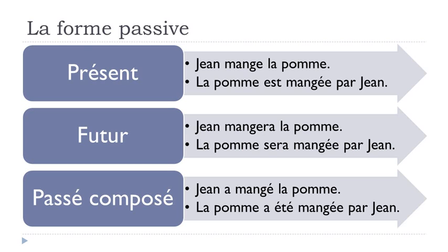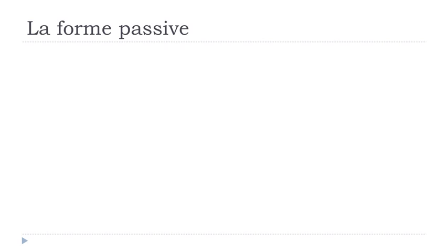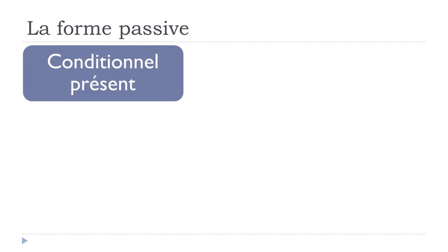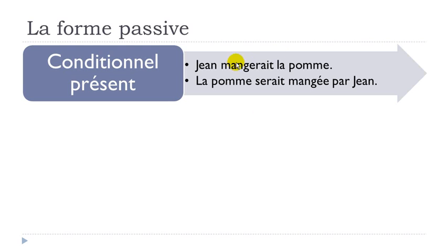For le passé composé: Jean a mangé la pomme becomes la pomme a été mangée par Jean. A été is the passé composé form of être — the rest doesn't change. Then for le conditionnel présent: Jean mangerait la pomme — mangerait means 'would eat' — becomes la pomme serait mangée par Jean. Serait is the conditionnel présent form of être.